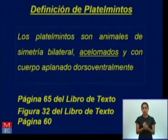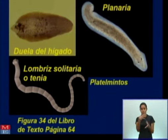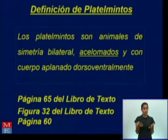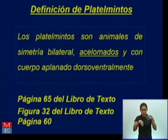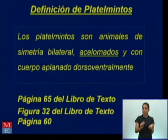Con un cuerpo aplanado dorso-ventralmente. Vuelvo a las imágenes para que puedan ver: aquí en la duela del hígado perfectamente se ve el cuerpo aplanado. También en la tenia y en la planaria — inclusive planaria, el nombre nos dice algo de una característica distintiva de este grupo. En la página 65 del libro de texto pueden encontrar esta definición. También les sugiero que vean la figura 32 del libro de texto, página 60, que es muy importante para dominar este contenido.